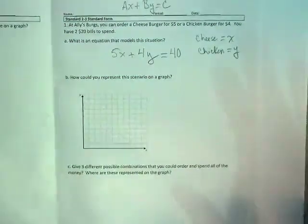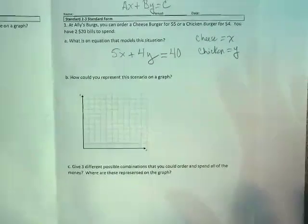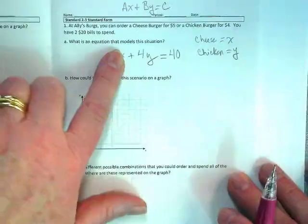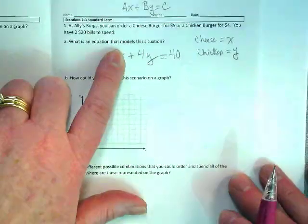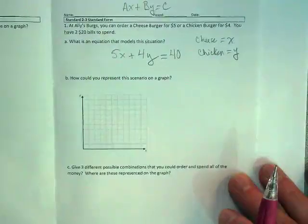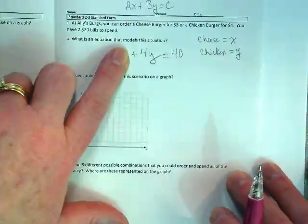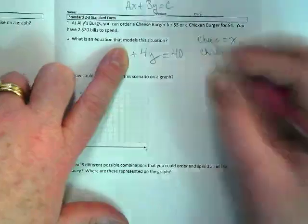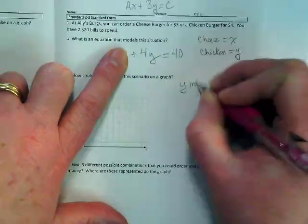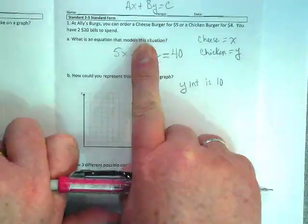When I have standard form, what is it most useful for finding as far as graphing? I can use the cover-up method to find what - the intercepts. So if I'm covering this up, I'm going to get my y intercept, which is what? Okay, so y intercept is 10. What's my x intercept?